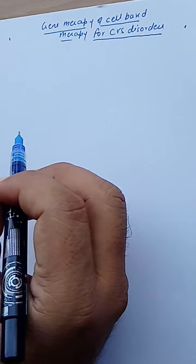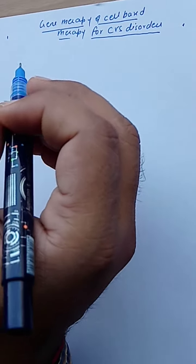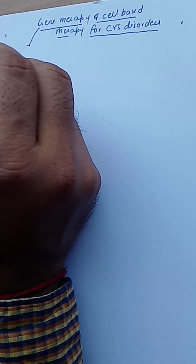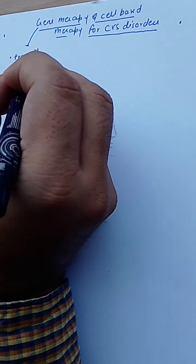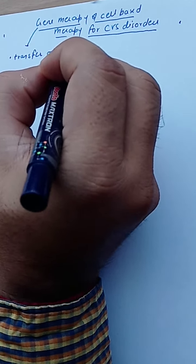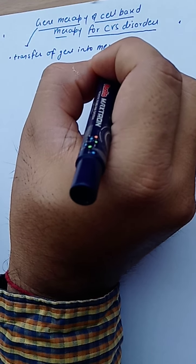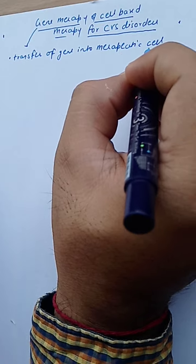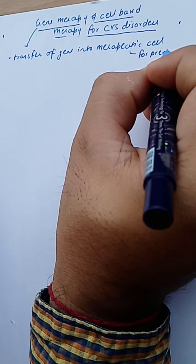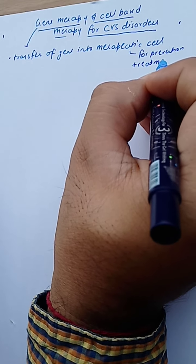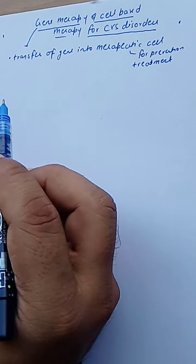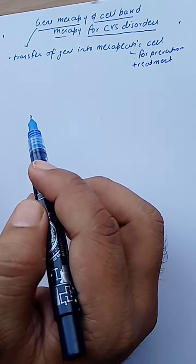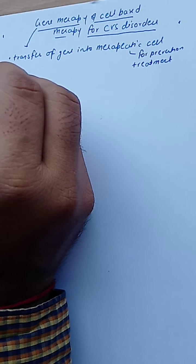Good morning. In this video I am going to discuss gene therapy and cell-based therapy for CVS disorders. Gene therapy is the transfer of a gene into therapeutic cells for the prevention as well as for the treatment of disease. The first successful gene therapy was completed in 1989.